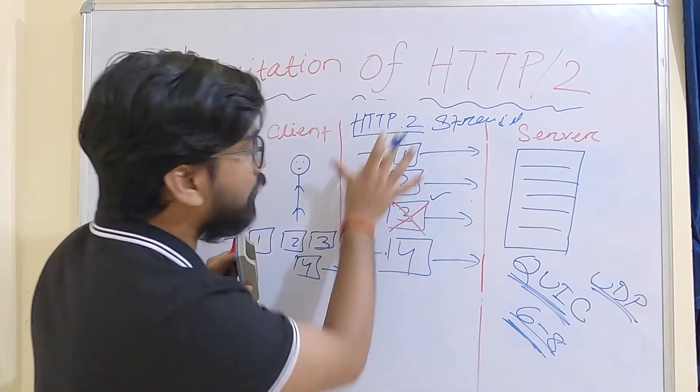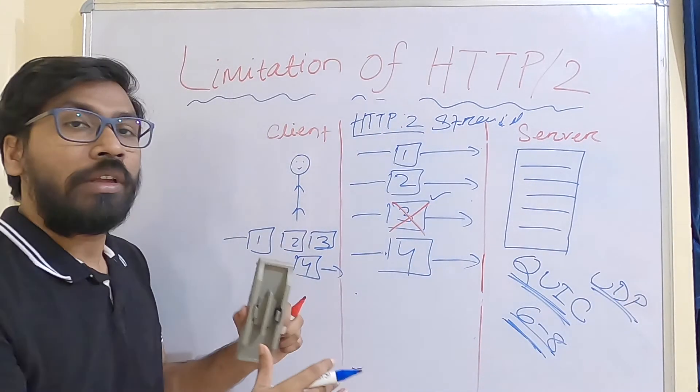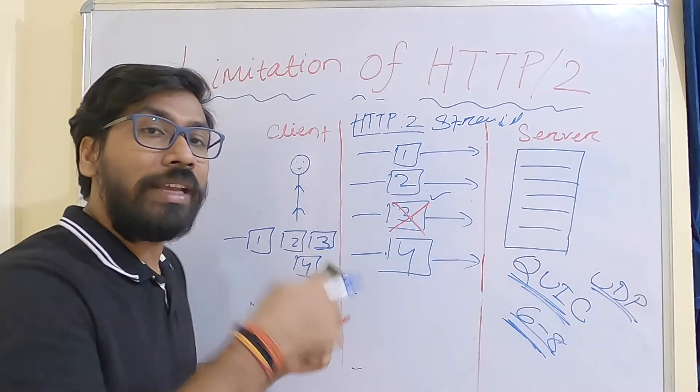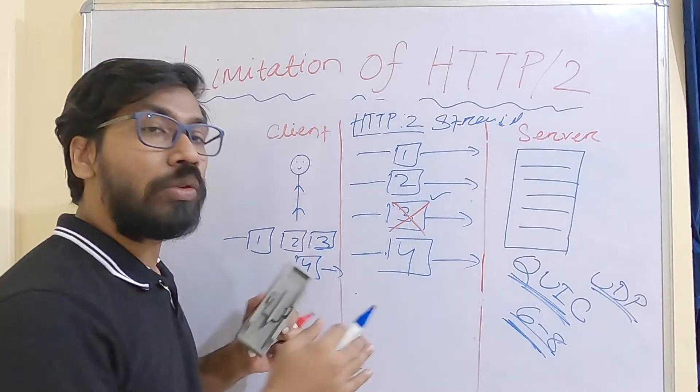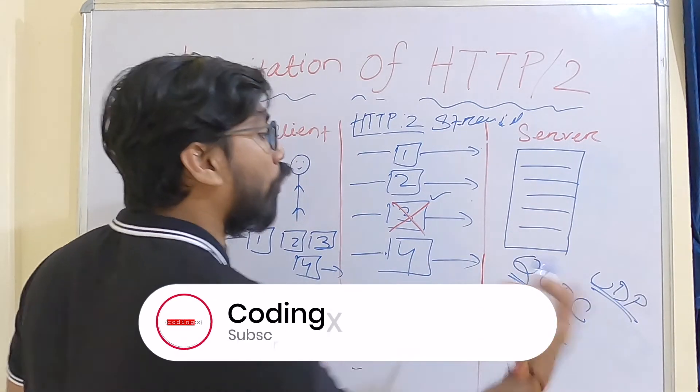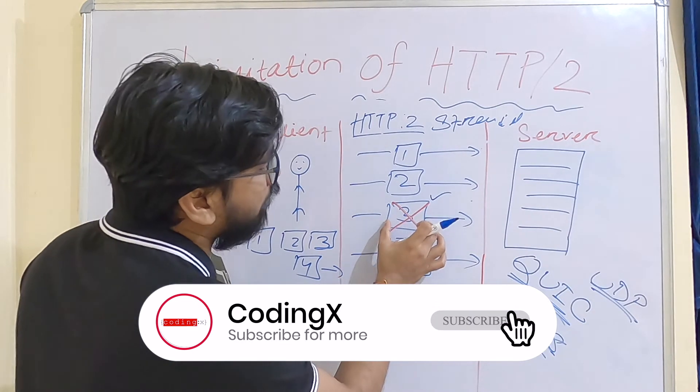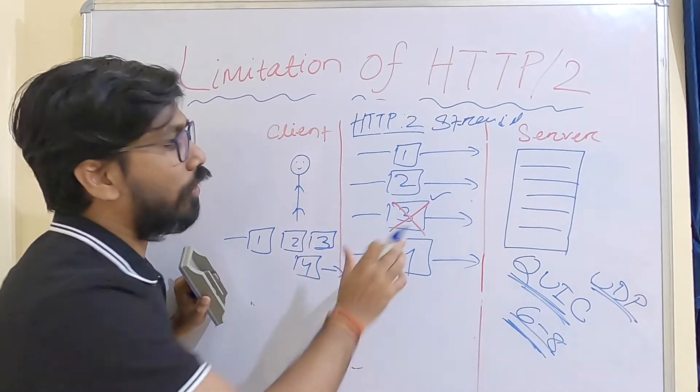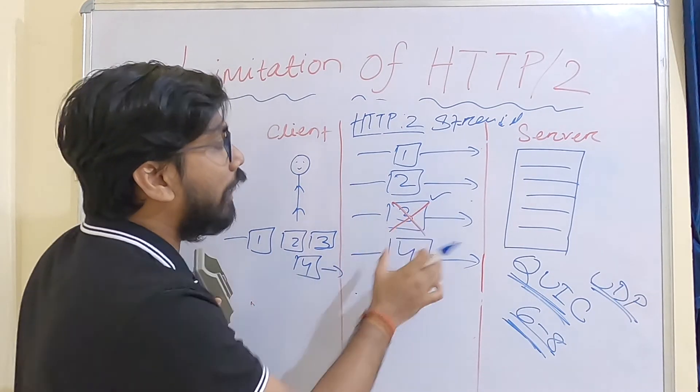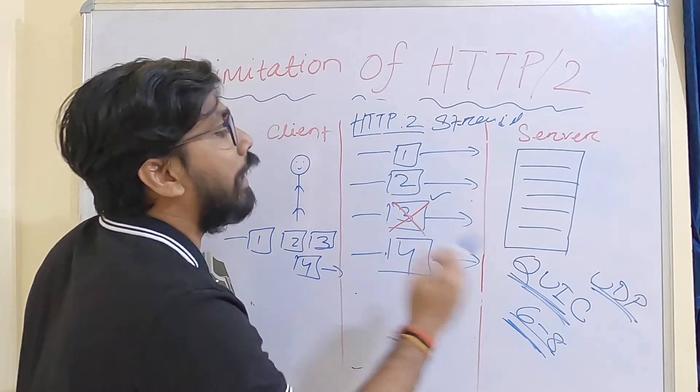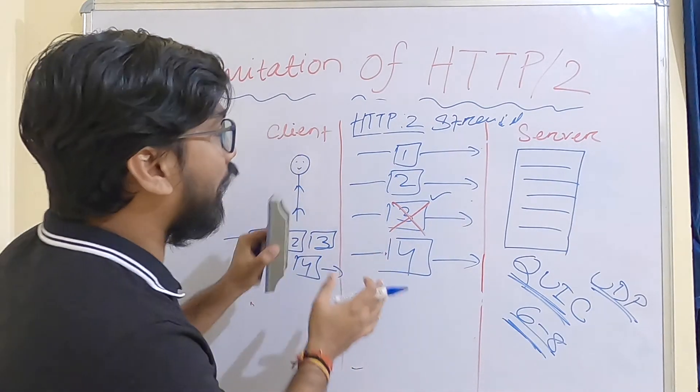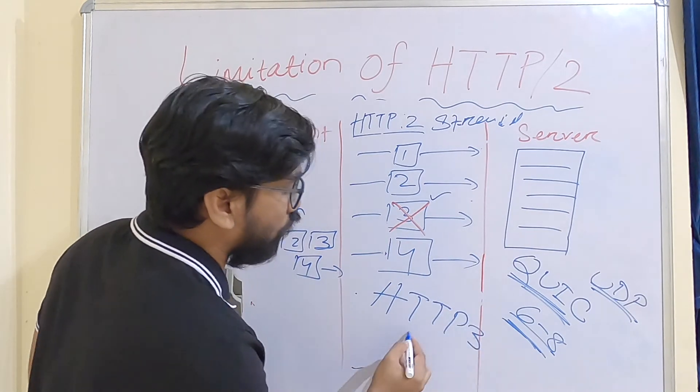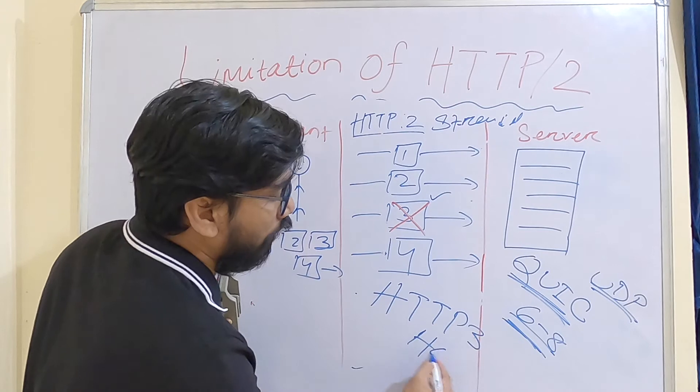In UDP, there is no mechanism of retransmit. But in QUIC it has been improvised and retransmission is introduced in UDP - that's why it's a new protocol called QUIC. If a packet is lost, other packets will not wait for that particular packet. That means all the packets are independent in UDP.